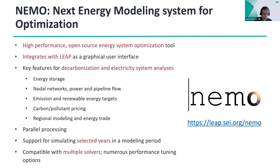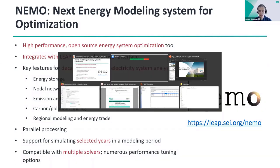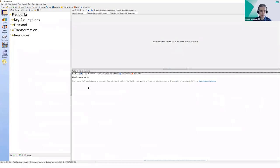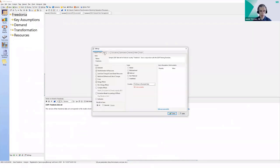NEMO supports multiple solvers with many performance tuning options, including a parallel processing capability that helps with preparing the optimization model for the solver. It also lets you simulate selected years in your modeling period, which can be helpful if you're working with a model that takes a few hours to solve for a 50-year time horizon—you can instead select to solve only every 10 years, for example, and cut the runtime substantially. This feature is also available for regular LEAP models that have nothing to do with optimization.